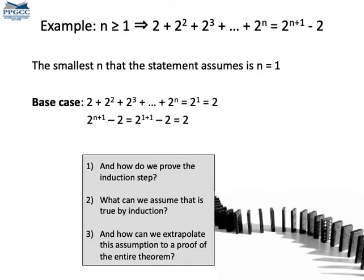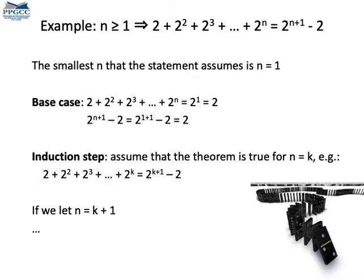Now, would you like to try to demonstrate the rest of the theorem? How can you extrapolate from the inductive step? So, we assume by induction that the theorem is true for some k. Then we have this equality here. Right here. What happens if we let n equal to k plus one?